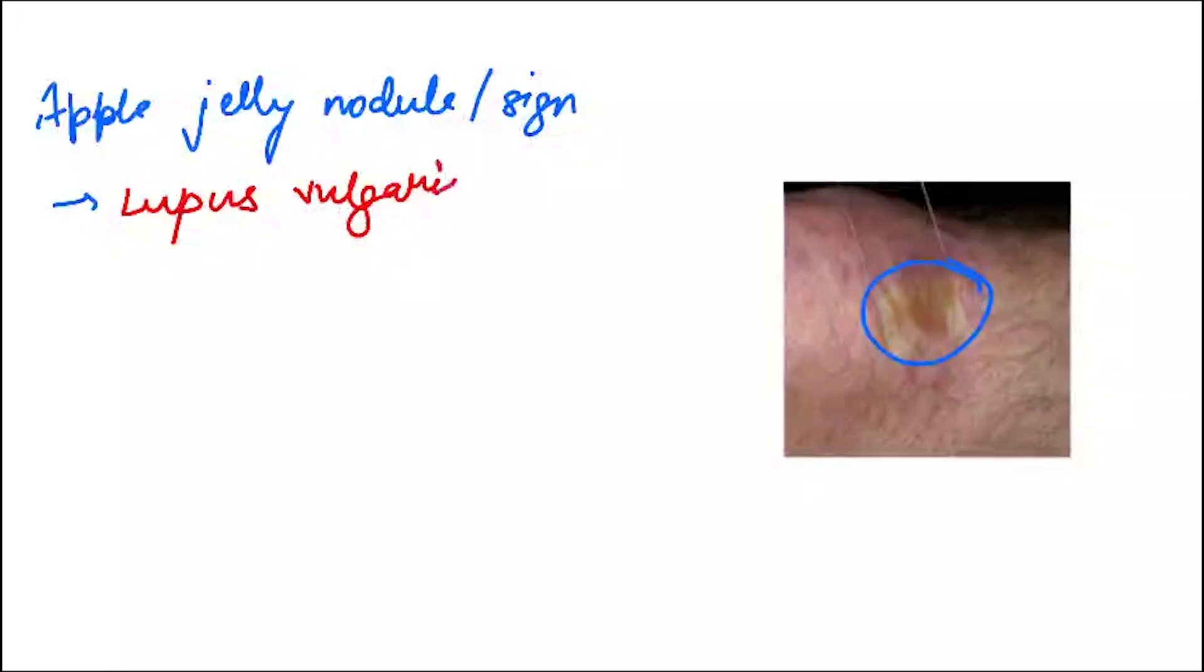This is apple jelly nodule or apple jelly sign. As you can see, the lesion is being pressed with the help of a slide, and you can see a yellowish tinge here. This is known as apple jelly nodule. It is seen in granulomatous disorders like lupus vulgaris, sarcoidosis, and leishmaniasis.